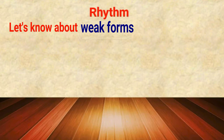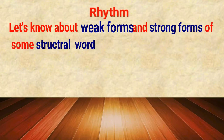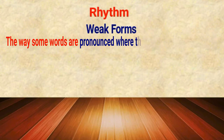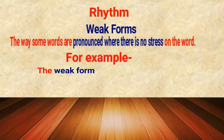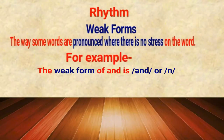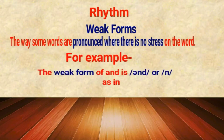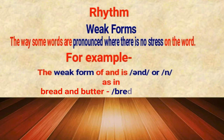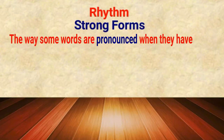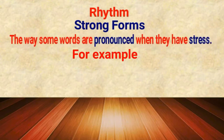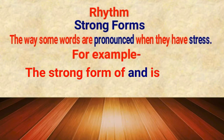Let's know about weak forms and strong forms of some structural words. Weak forms are the way some words are pronounced when there is no stress on the word. For example, the weak form of 'and' is 'ent' or 'en', as in 'bread and butter' — we say 'bread 'n butter', not 'bread AND butter'. Strong forms are the way some words are pronounced when they have stress. For example, the strong form of 'and' is 'and'.